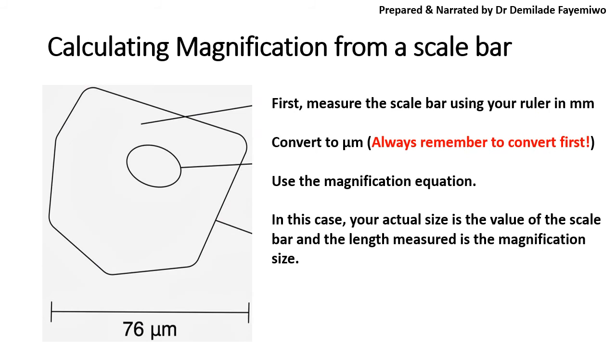The other thing you might be asked to do is to calculate magnification from a scale bar. Now, you might be given an image that looks like this, and you say to yourself, okay, what do I do here? So you've been given a scale bar at the bottom of this image, and you've also been given a number. Most of the time, the scale bar will come with a number. So the first thing you have to do is take your ruler and measure the length of this scale bar, so basically from where it begins to where it ends, and you measure that in millimeters. Again, remember to convert to micrometers, because as you can see here with the image that you have, or rather with the unit that you have under the scale bar, it is in micrometers. So when you measure this length over here, you have to make sure that it is also in micrometers.